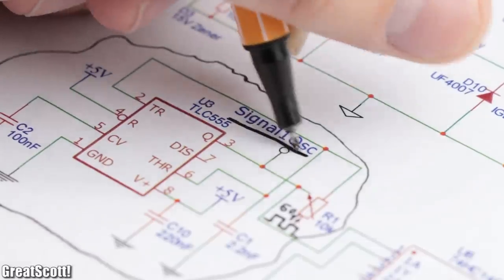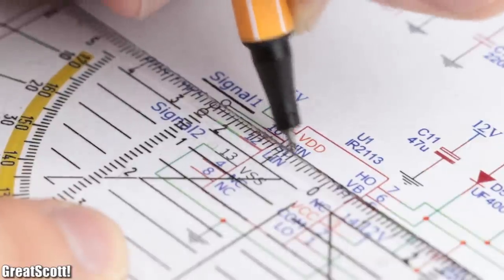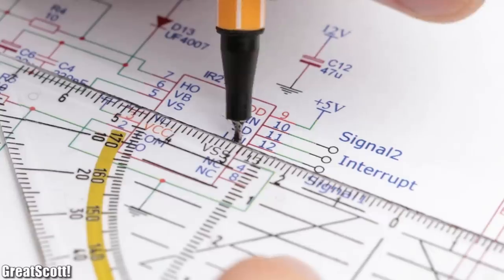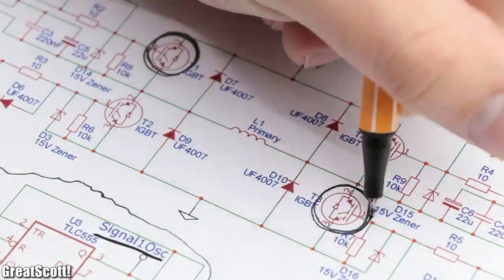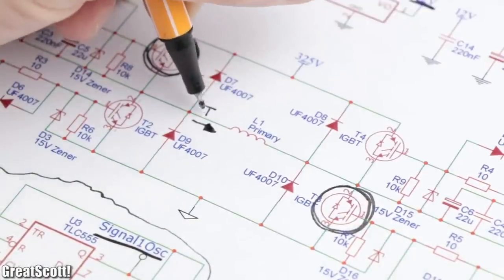This signal then connects to the high input of the left IGBT driver and the low input of the right IGBT driver, so that the top left and down right IGBT is turned on at the same time.